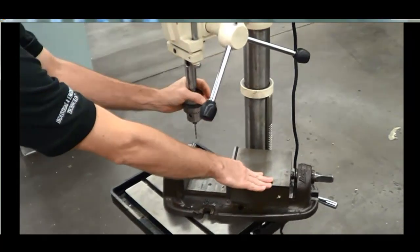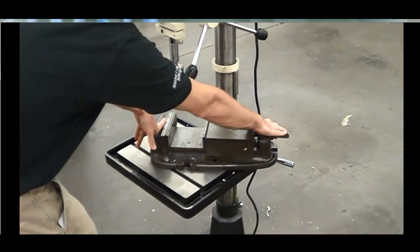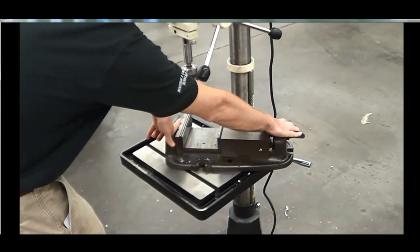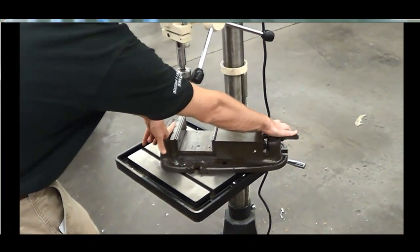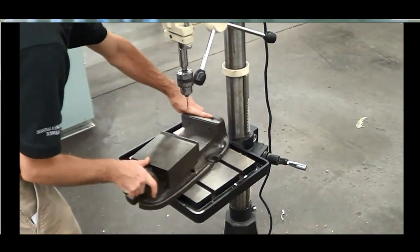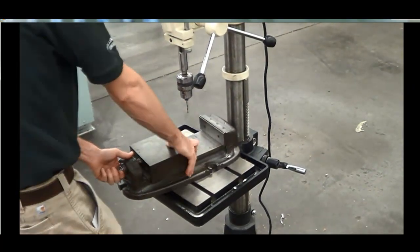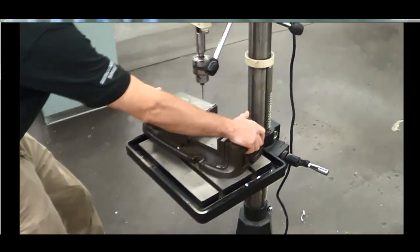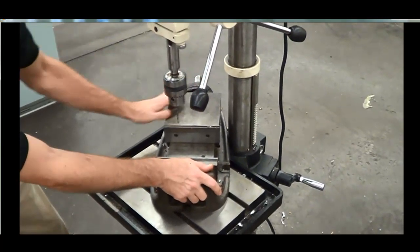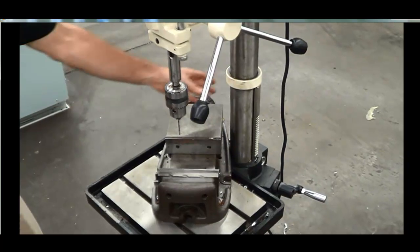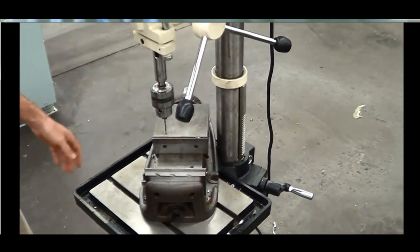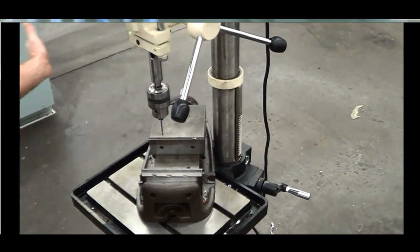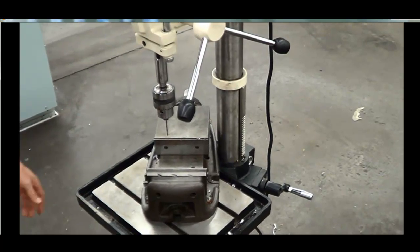Your spindle turns clockwise, so if the material is a type of material that tends to grab onto the tool, this can spin towards the operator and injure the operator. So you always, when you're drilling anything on a drill press, you want to make sure that your vise is towards the column on the left side. That way if it does grab, it's not going to go anywhere and it's not going to injure anyone.